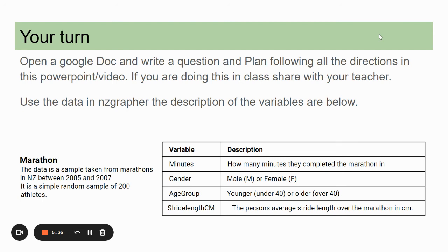Okay so I've got one here ready for you to go. You can do this on your own. In NZ Grapher there is a data set about marathons. You're given the amount of minutes they complete the marathon in, gender male versus female, an age group younger and older, and a stride length, the average stride length over the whole marathon in centimeters to investigate. Thank you.